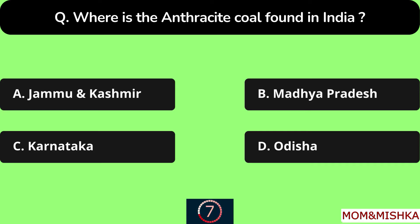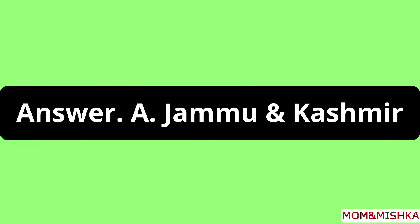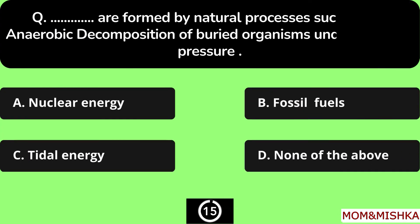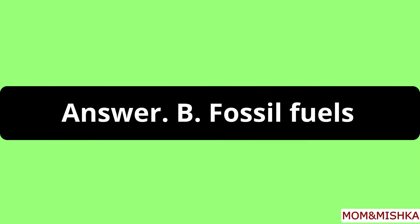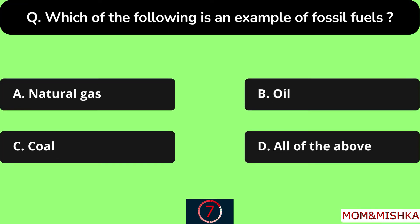Where is anthracite coal found in India? In Jammu and Kashmir, option A. Fossil fuels are formed by natural processes such as anaerobic decomposition of buried organisms under heat and pressure. The answer is fossil fuels, option B.